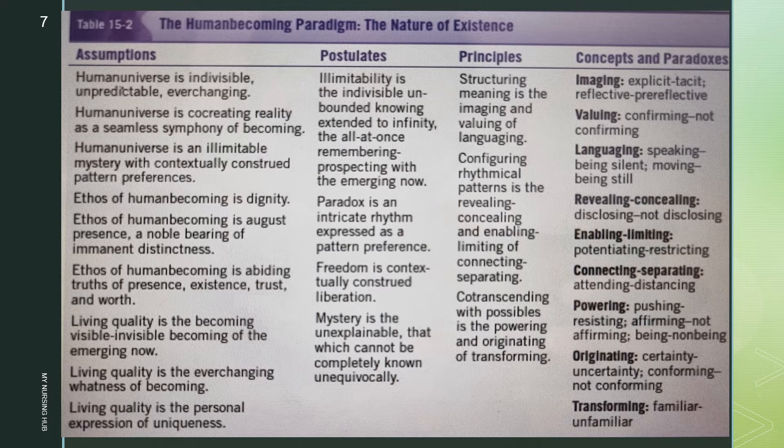This first principle has three concepts: imaging, valuing, and languaging. The first concept, imaging, involves explicit-tacit and reflective-pre-reflective paradoxes. Imaging is an individual's view of reality — a shaping of personal knowledge in explicit and tacit ways. Some knowing is a reflective, deliberate process whereas other knowing is pre-reflective. For Parse, people are inherently curious and seek answers; the answers emerge as persons explore meaning in light of reality. Imaging is a personal interpretation of meaning, possibility, and consequence.